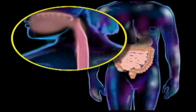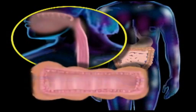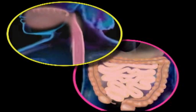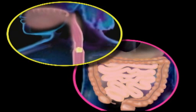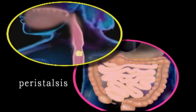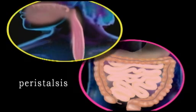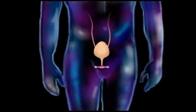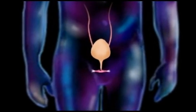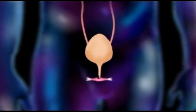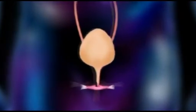In our esophagus and intestines, some smooth muscle cells are arranged lengthwise and some wrap around. By alternately contracting these two kinds of smooth muscles, a moving wave of contraction called peristalsis is created that pushes material along. Smooth muscles in the ureters and bladder keep urine flowing away from the kidneys and then out of the body.